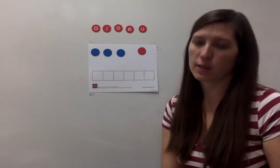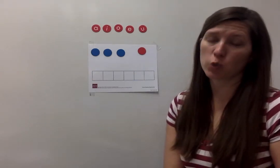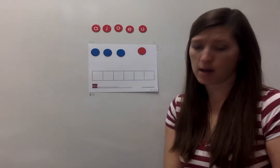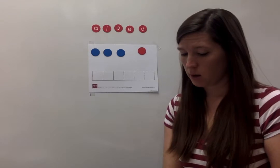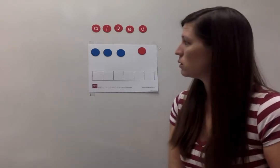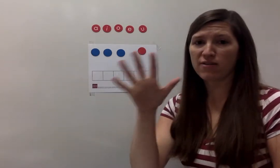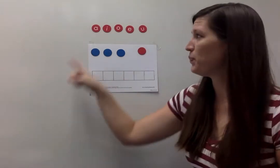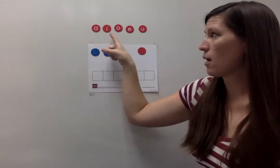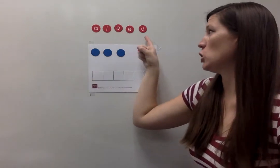Today's chip kit lesson is 2.3 short I. Let's review our vowels. We have five vowels: A, I, O, E, U.